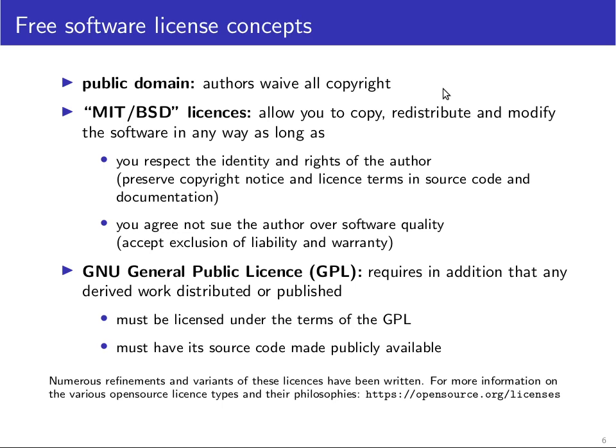The closest equivalent — licenses that allow anyone to do anything they want — have come out of the Berkeley Software Distribution project: the so-called BSD license. Similarly, MIT also published a lot of open source software in the 1980s, most notably the X Window System, and they developed a license allowing anyone to copy, redistribute, and modify the software under two conditions: you must preserve the original copyright notice so there is no doubt who wrote the software originally, preventing companies from including public domain software in proprietary products and later claiming ownership.